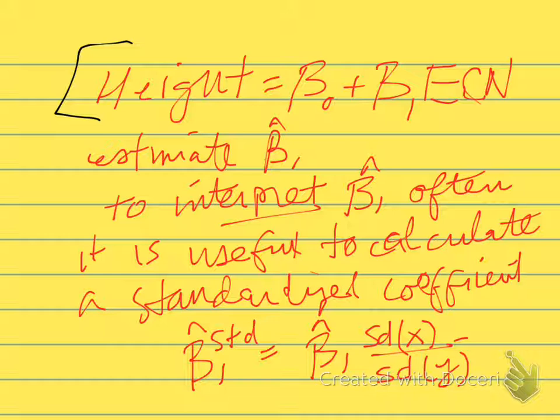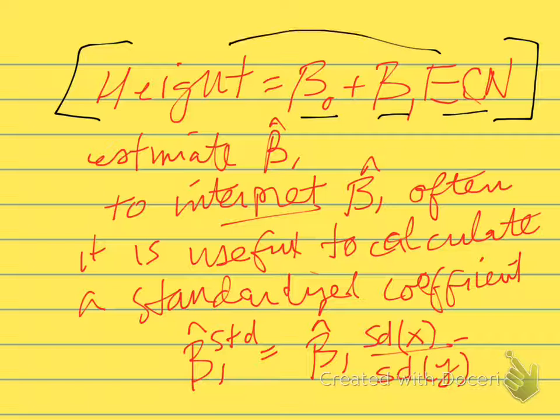I'd like to talk about standardized coefficients. A lot of times we might estimate an equation like this: Height equals beta0 plus beta1 times early child nutrition. So we think that early child nutrition has an effect, influences height later in life.